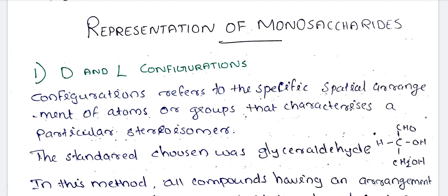There are two types. One is D and L configurations — dextrorotatory and levorotatory. We are going to talk about photosimilar.